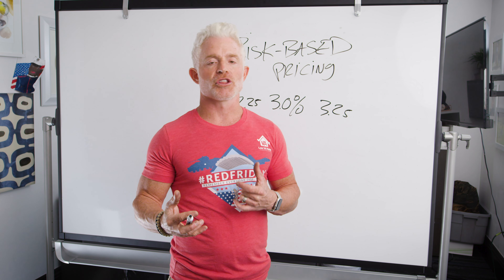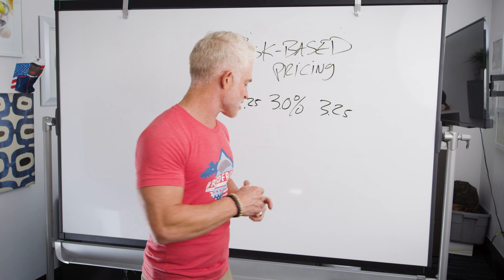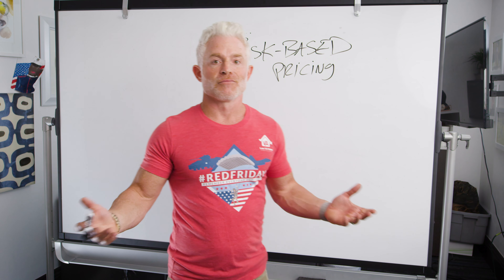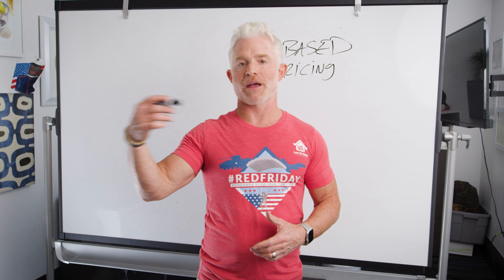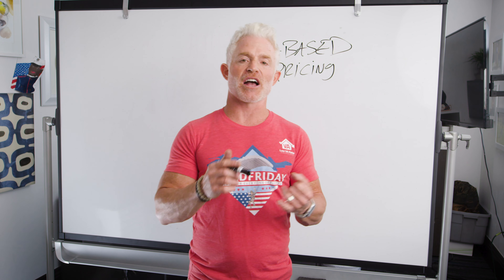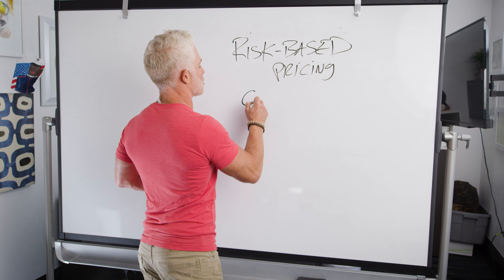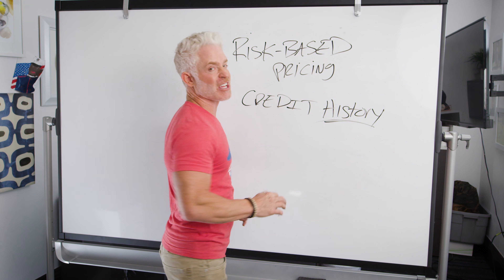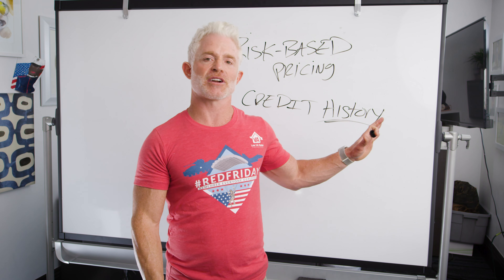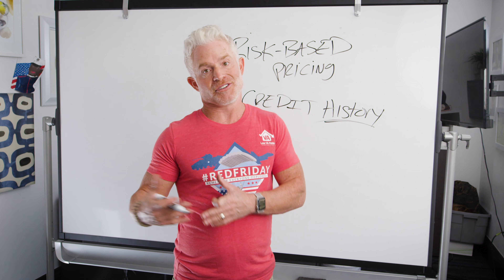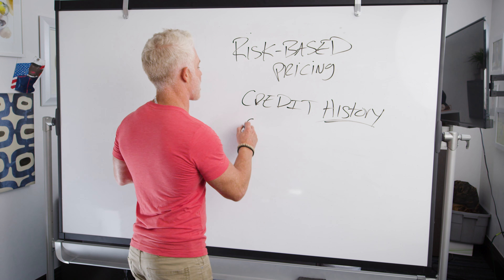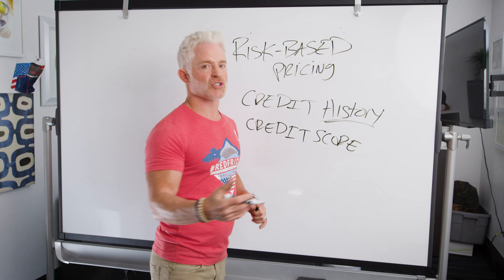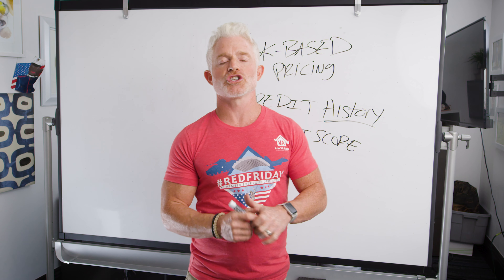How do lenders like Low VA Rates determine the level of risk that each veteran or applicant brings to the table? One of the biggest factors is your credit history, because that shows whether or not you're paying back your loans on time. If you've got a good, clean credit history with timely payments, then you're likely also going to have a higher credit score. So the next thing we're going to look at is your credit score.